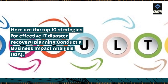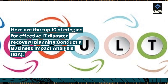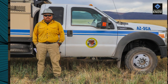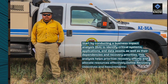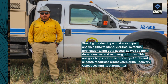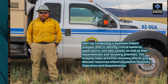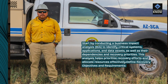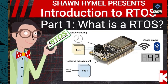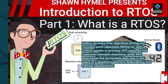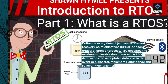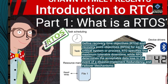Here are the top 10 strategies for effective IT disaster recovery planning. First, conduct a business impact analysis (BIA). Define recovery time objectives (RTOs) and recovery point objectives (RPOs) for each critical system or process. RTO specifies the maximum tolerable downtime, while RPO determines the acceptable data loss in the event of a disaster.